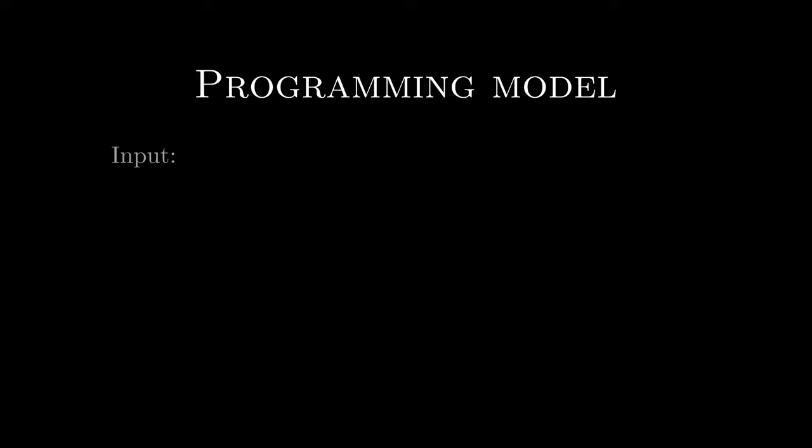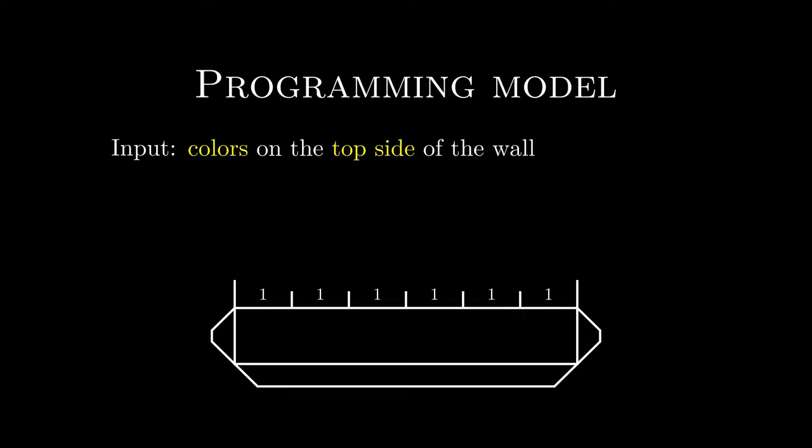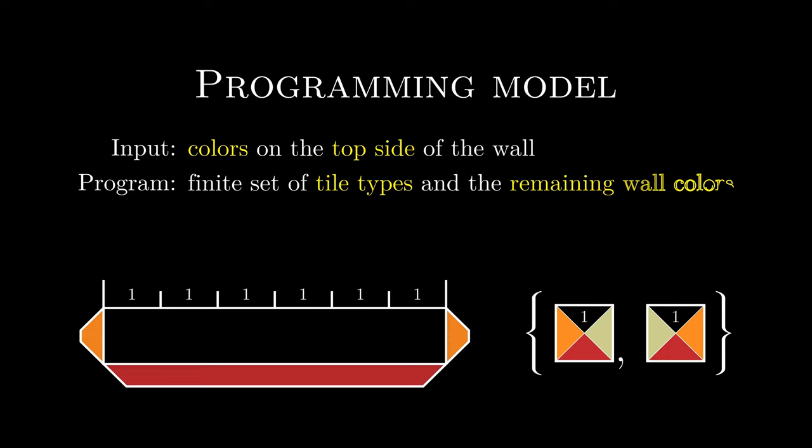This is essentially the programming model that we'll be using. The input will be some finite sequence of colors on the top side of the wall, which could also be symbols to make some of the programs more readable. Our program will be a finite set of tile types and the remaining colors of the wall. Note that neither the tileset nor the wall colors can depend on the input.